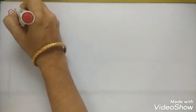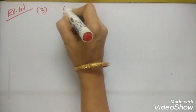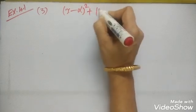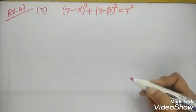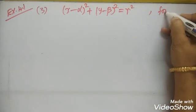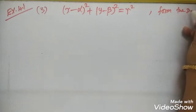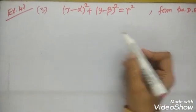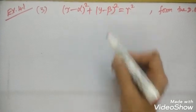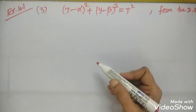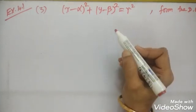Exercise 4.1, continuing from the previous class. Question number 3: given an equation (x minus alpha) squared plus (y minus beta) squared equals r squared, we want to form the differential equation. How many constants are there? Two constants — one is alpha and the other one is beta. So, differentiate two times.